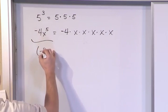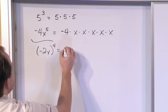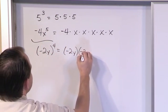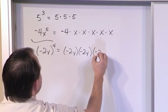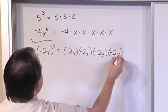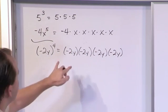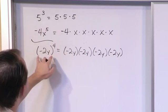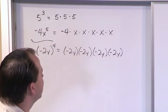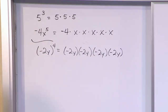If you had something like negative 2y raised to the fourth power, that's negative 2y, times negative 2y, times negative 2y, times negative 2y. Any time you see parentheses just sitting next to each other, it means multiplication. We're multiplying everything inside the parentheses, which is negative 2y, times itself 4 times. So everything in the parentheses is raised to the power of 4.